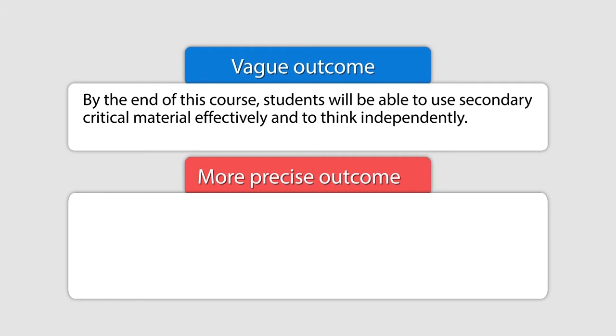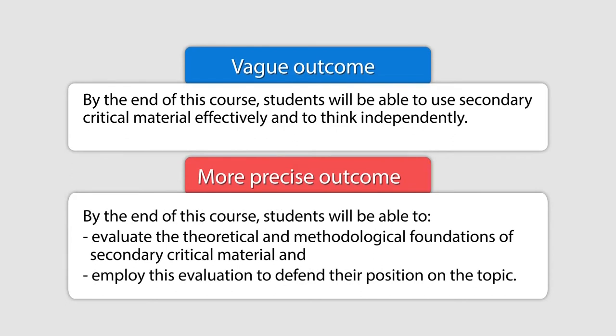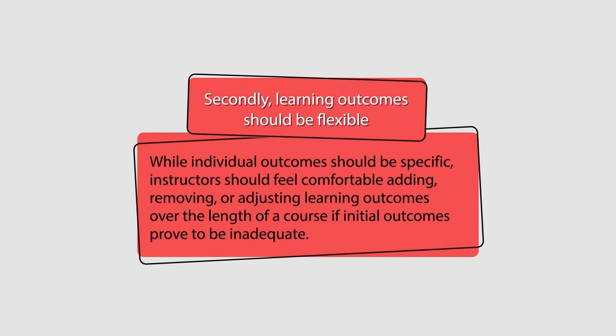Another vague learning outcome: 'by the end of this course students will be able to use secondary critical material effectively and to think independently.' This is vague because there is no action verb used and it is not written in behavioral terms. The more precise form: 'by the end of this course students will be able to evaluate the theoretical and methodological foundations of secondary critical material and employ this evaluation to defend their position on the topic.' Evaluate and employ are the two action verbs used, making the learning outcome more precise and clear.